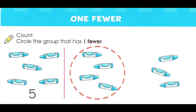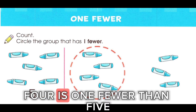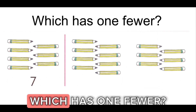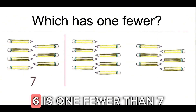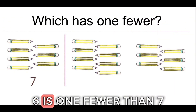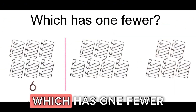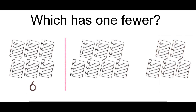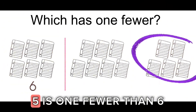One fewer. Circle the group that has one fewer. Four is one fewer than five. Which has one fewer? Six is one fewer than seven. Which has one fewer? Five is one fewer than six.